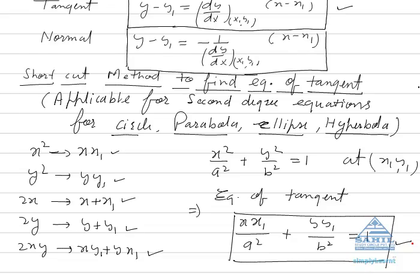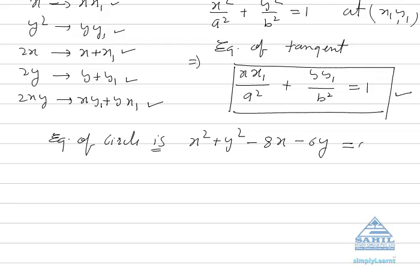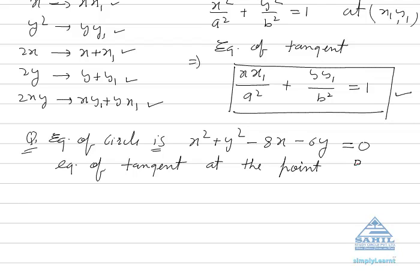Another example: the equation of a circle is x² + y² - 8x - 6y = 0. We have to find the equation of tangent at the point (8, 6). Note that (4, 3) will be the center, so (8, 6) lies on the periphery of the circle. Let's see how we can find the equation of tangent.